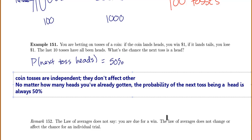The law of averages does not say that you're due for a win. If you've tossed the coin 10 times and lost every time, the law of averages does not mean you're due for a win — it doesn't change or affect the chance for an individual trial. What we're saying is the overall percentage will get closer and closer to your expected value the more times you do something, but we can't say anything about individual trials. The chance of your next toss being a head is always 50%.